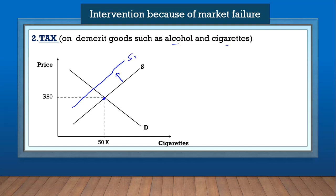Remember this is the original equilibrium price — let's say the price was 80 rands for a pack of cigarettes. But after the government has introduced a tax, we will have a new equilibrium price and a new equilibrium quantity. Let's say the equilibrium quantity goes down to 40k and the price of cigarettes now increases to 100 for that given quantity.